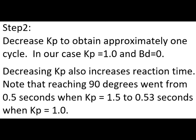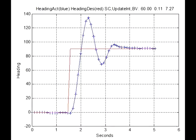In step two, we decrease Kp to obtain approximately one cycle of oscillation. This also increases response time from 0.5 seconds to 0.53 seconds to reach the first crossing of 90 degrees.